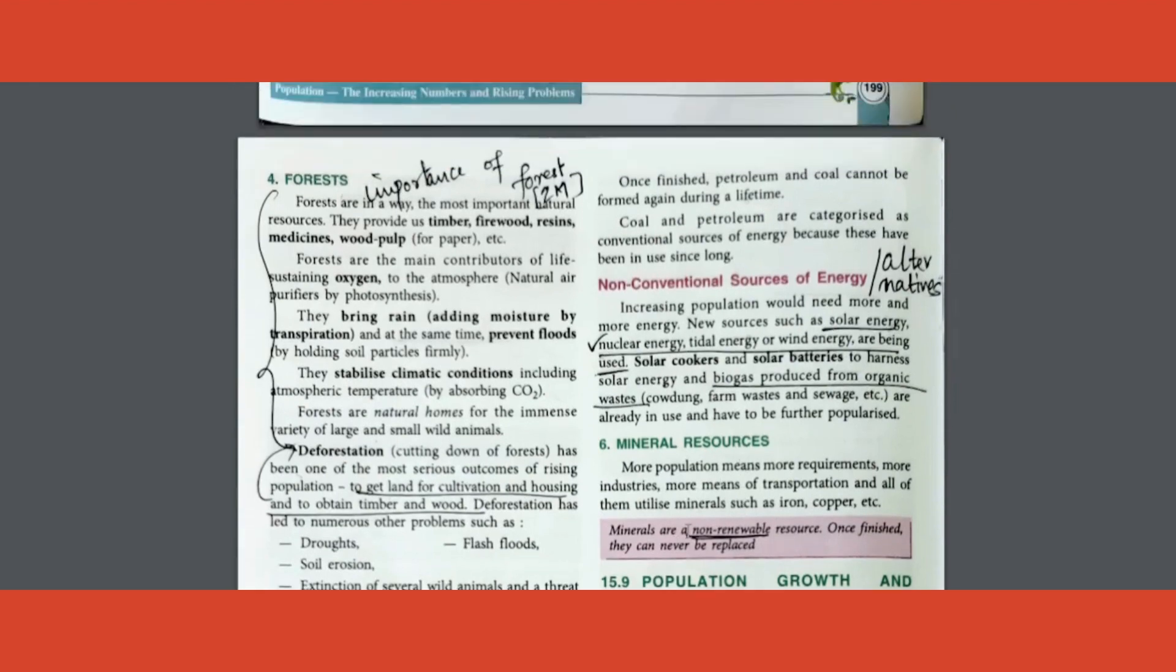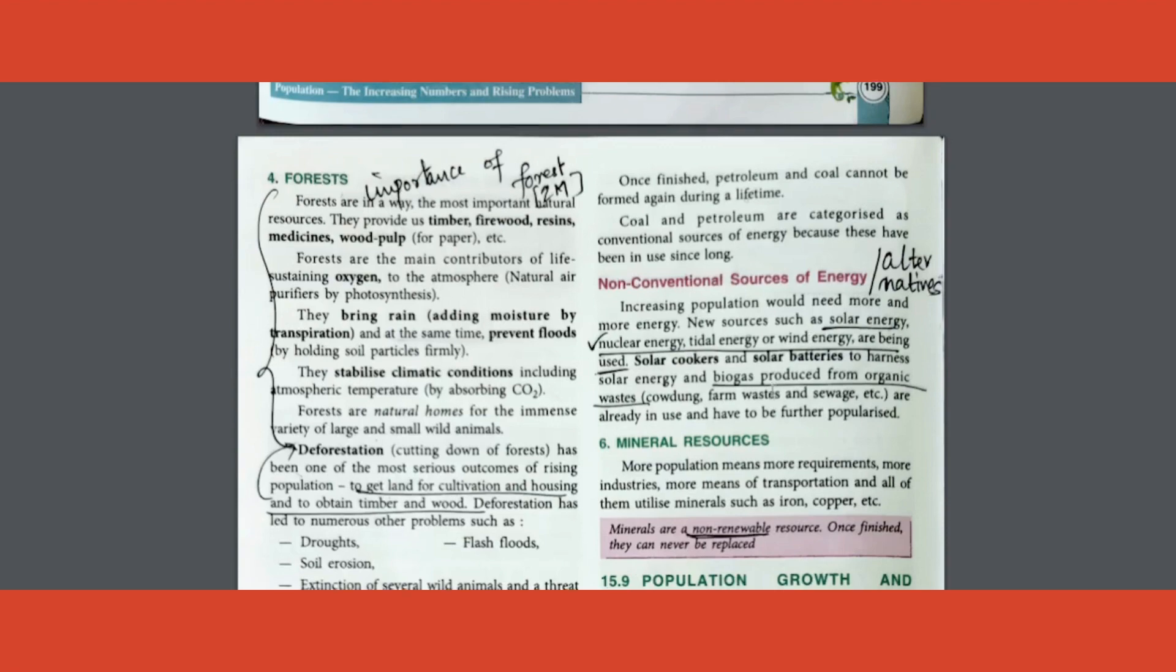Minerals are dash resource, MCQ was seen coming, so mark that as well. Some examples of non-conventional energy or alternative energies are given. Again, mark those, very easy: solar energy, nuclear energy, tidal energy, wind energy, biogas. That's it.